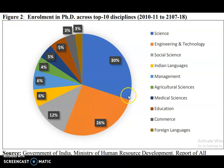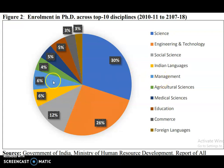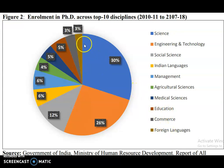The third highest is social science at 12%. The fourth highest is Indian languages at 6%. The next is management, also at 6%. Then agriculture sciences at 4%, medical sciences at 5%, education at 5%, commerce at 3%, and foreign languages also at 3%. Of course there are many more disciplines to do PhD, but these are the top 10 disciplines in India.